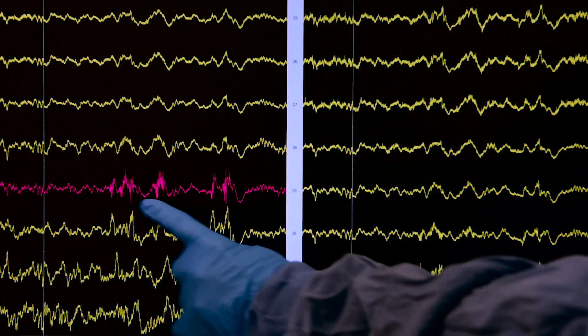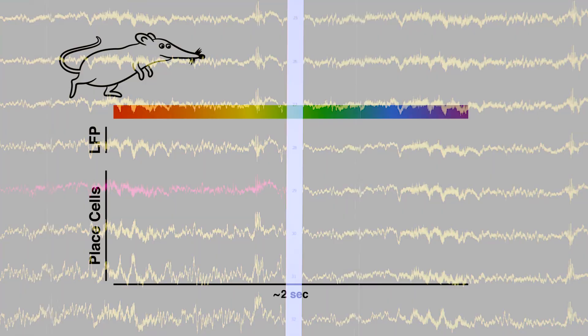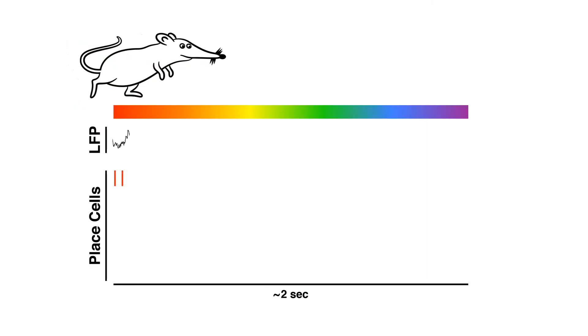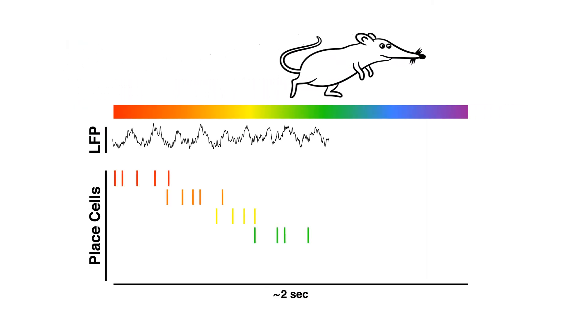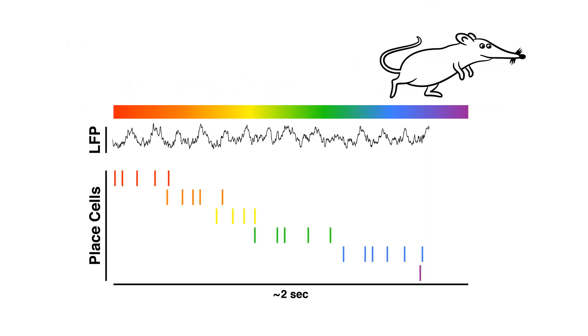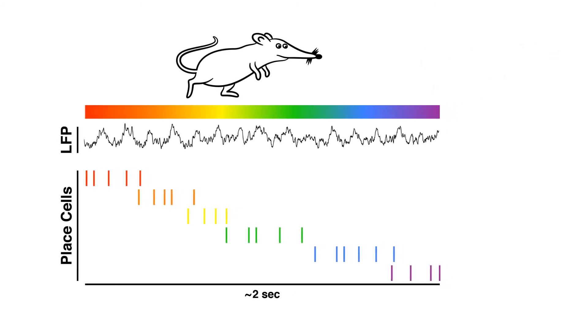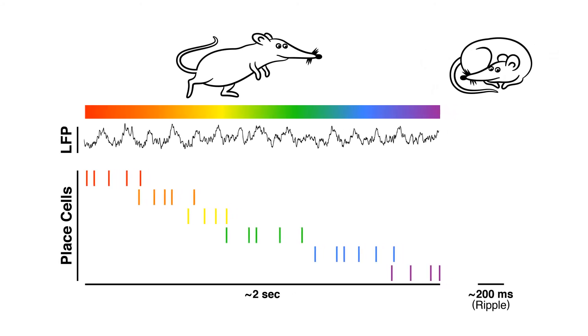Ripples are the LFP signature of hippocampal replay. As an animal moves through its environment, place cells in the hippocampus fire as the animal passes through the cell's place field. During periods of immobility, these same neural ensembles are replayed — precisely reactivated in a time-compressed manner. Replay is thought to be critical for memory consolidation and potentially memory retrieval.